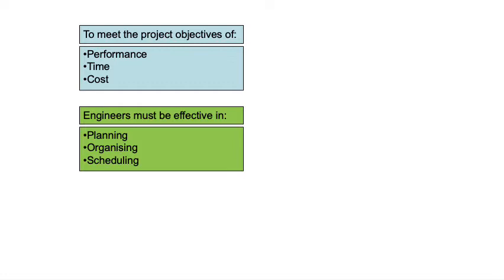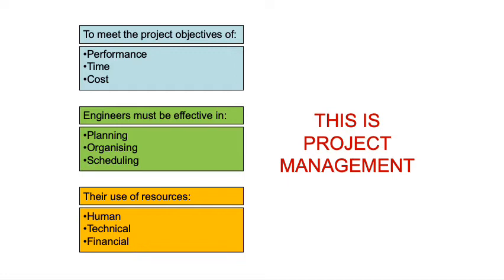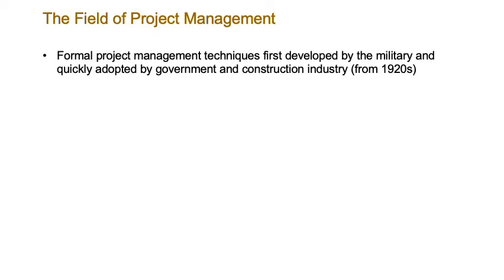Any project will have objectives, typically specified in terms of performance, time and cost. An engineer needs to meet these objectives by planning, organizing and scheduling — scheduling for time, organizing and planning for performance and cost. They need to use their resources: human resources, technical resources, financial resources — all of these will be touched on in this module. Nothing will be looked at in any particular depth, but we will spend time on most of the concepts, topics, ideas and tools you'll need as an engineering manager.